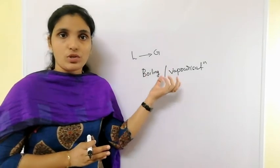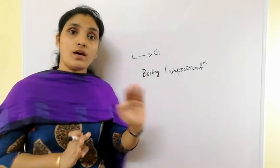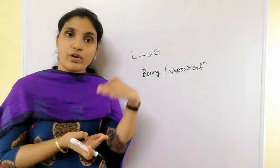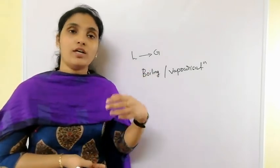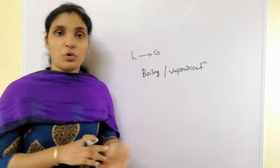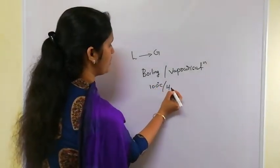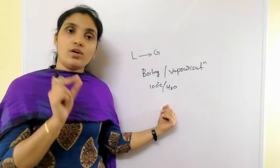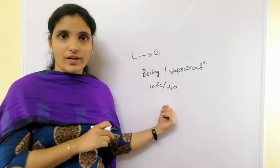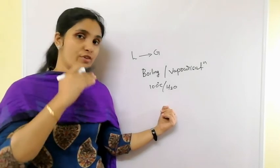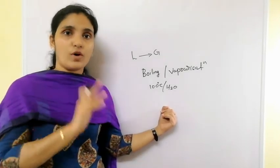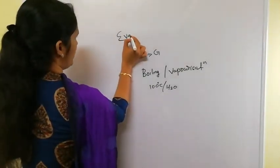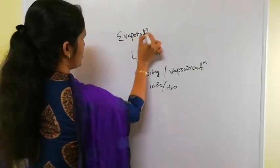We know boiling occurs at a particular temperature — each substance has its own boiling point. When it reaches that temperature, boiling occurs. For water, the boiling point is 100°C, so water starts boiling only when the temperature reaches 100°C. Boiling is the conversion from liquid to gas at its boiling point.